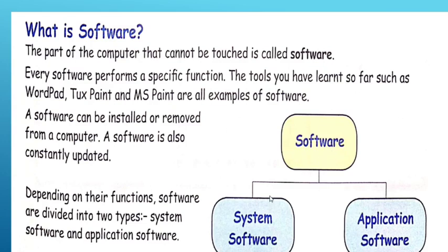Software is of two types. One is system software, and the other one is application software, depending on their function. This type of software is divided into these two types: system software and application software.